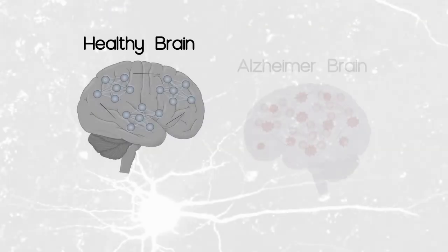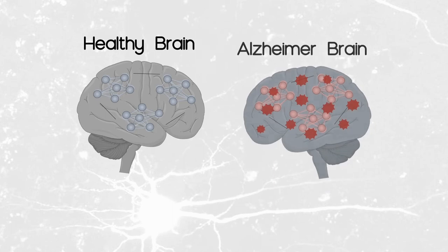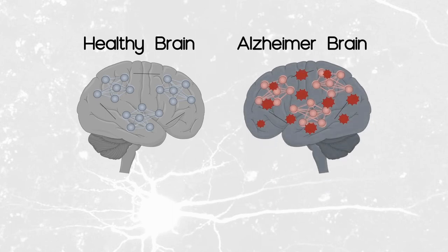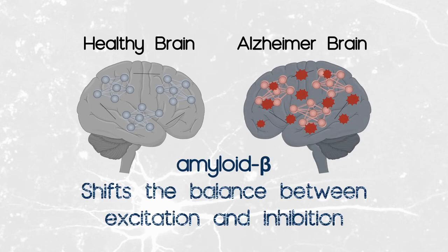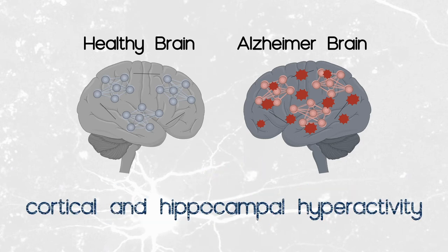But how does amyloid induce the pathology? A growing number of evidence suggests that amyloid beta shifts the balance between the excitatory and inhibitory neurotransmission, arising cortical and hippocampal overexcitation.